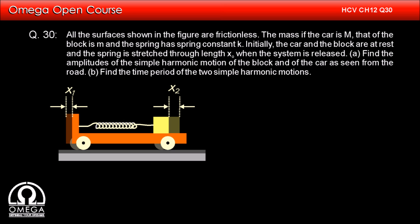Let us assume that the amplitude of oscillation of the car is X1 and that of the block is X2. Since the spring was initially stretched by X knot, X1 plus X2 must be equal to X knot. Also, as the center of mass of the system is at rest, capital M into X1 must be equal to small m into X2.